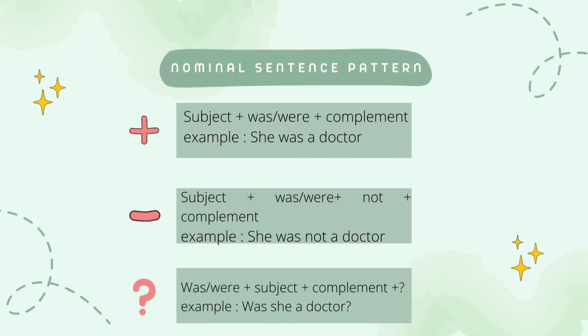For simple past tense patterns in nominal sentences, you can see more in the following infographic. For positive sentence, the pattern is subject plus was or were plus complement. For example, 'she was a doctor.' For negative sentence, the pattern is subject plus was or were plus not plus complement. For example, 'she was not a doctor.' For negative sentence, we add 'not' after the be past verb. Next is interrogative sentence. The pattern is was or were plus subject plus complement. For example, 'was she a doctor?'